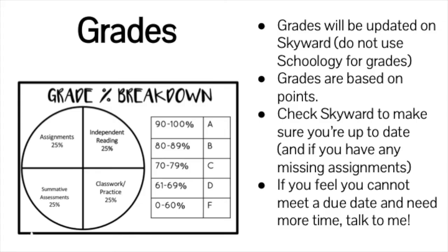Grades are pretty straightforward. They are based on points and will be updated in Skyward. Please do not check Schoology for grades. There are four categories: assignments (usually asynchronous homework), independent reading (the log and reflections), summative assessments (final projects, big essays, sometimes tests), and classwork or practice (synchronous things we do during class).